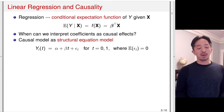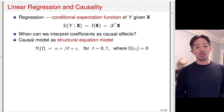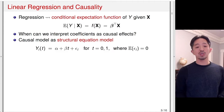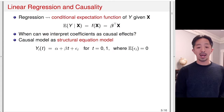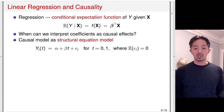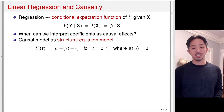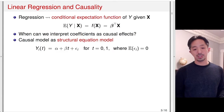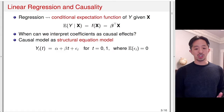One way to think about this is to write the causal model as a structural equation model. Here, I'm writing the potential outcome y of t as a linear function of the treatment status t: a simple linear function of alpha plus beta times t plus epsilon i, where epsilon i is the error term. T takes a value of 0 or 1. The error term is assumed to have mean zero, but this is just a normalization since we include the intercept alpha.